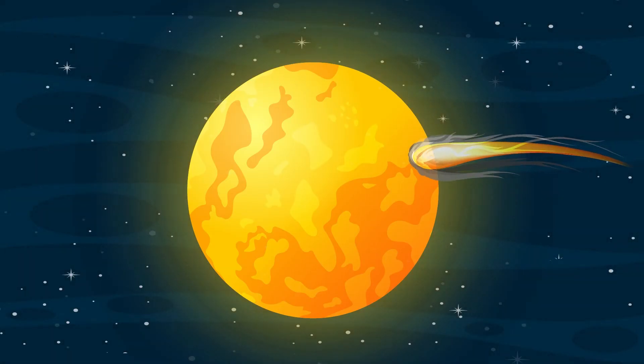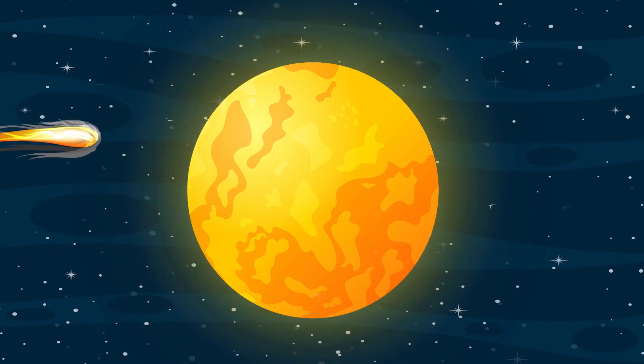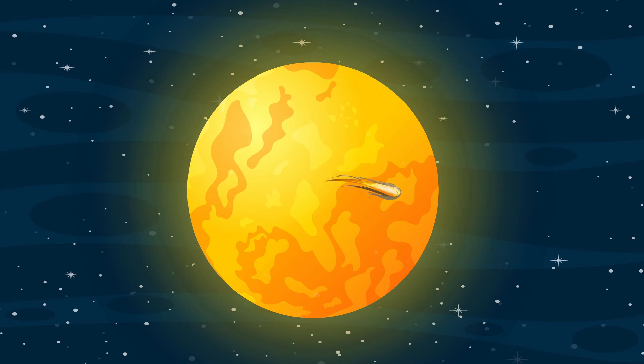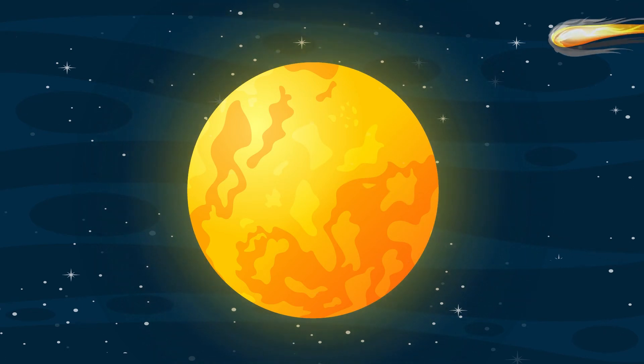On their way back from Neptune, our friends encounter a comet. Comets are icy, small solar system bodies. As they get closer to the Sun, they heat up and disperse gases and dust. This forms a comet tail that can be millions of miles long.